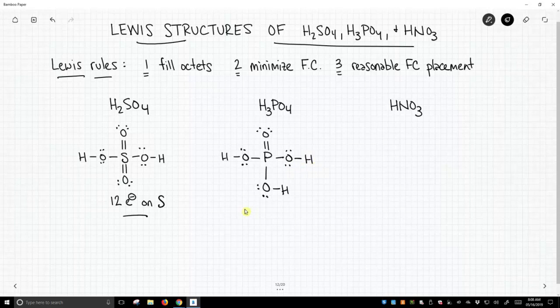Again, phosphorus, as a third row element, can expand its octet. So we have 10 electrons on phosphorus.